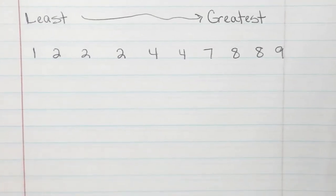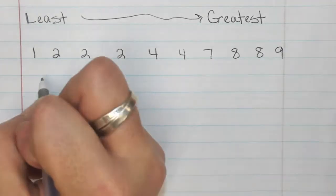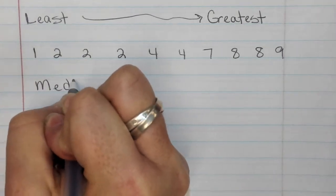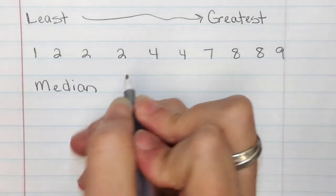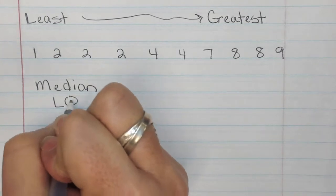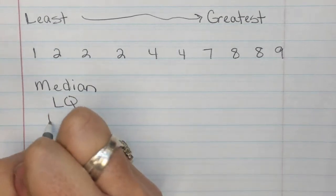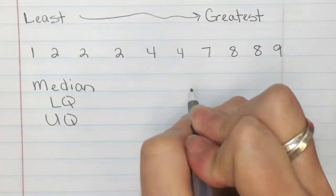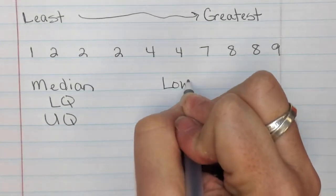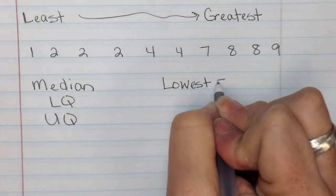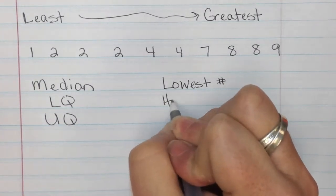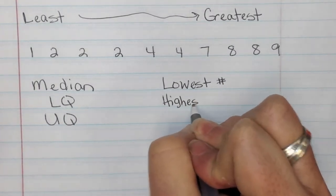Now to create a box and whisker plot you need five things. We're going to need to find the median, the LQ (lower quartile), and the UQ (upper quartile). We're also going to need to know where the lowest number in our data is and the highest number in our data.